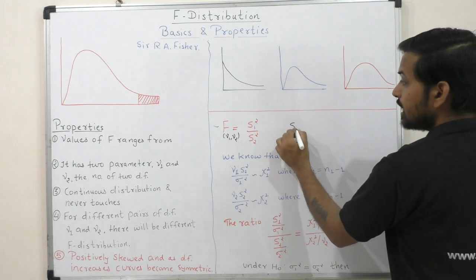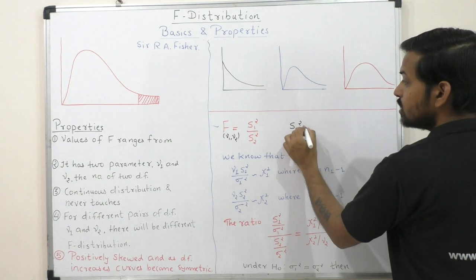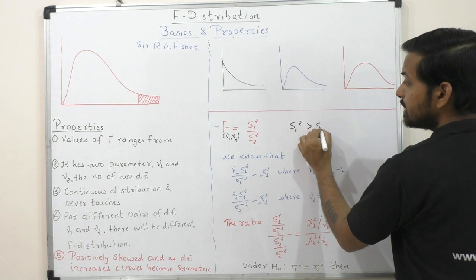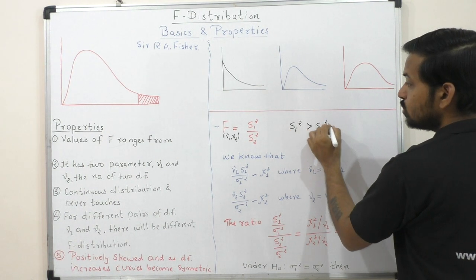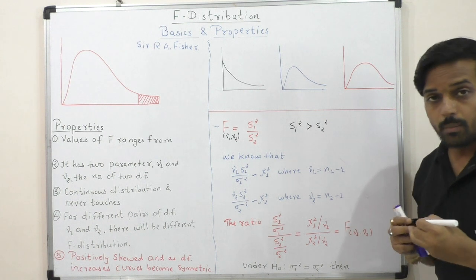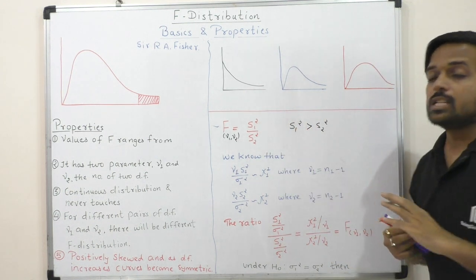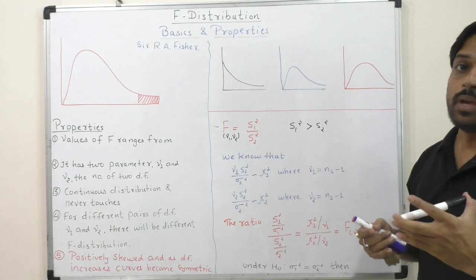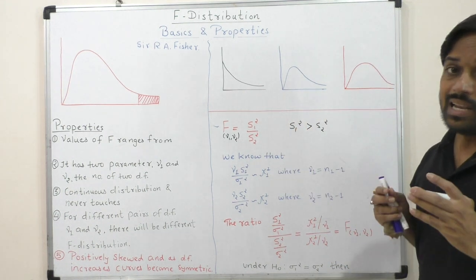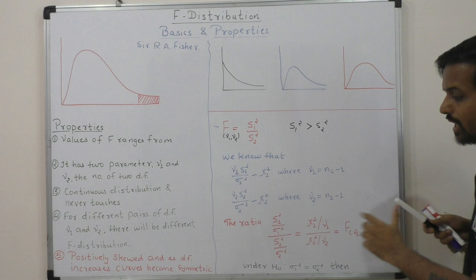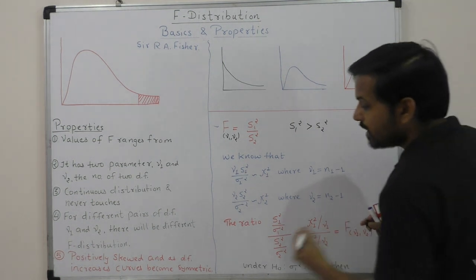We need to note that s1 squared should be bigger than s2 squared — that means the larger variance goes in the numerator. I am going to explain how to apply this formula.